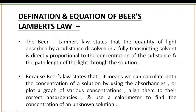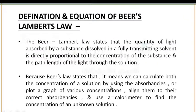In the previous lecture we studied Beer-Lambert's law, which states that the quantity of light absorbed by a substance dissolved in a fully transmitting solvent is directly proportional to the concentration of the substance. Beer's law states that absorbance is directly proportional to both concentration and path length of light through the solution. Using the Beer-Lambert equation we can calculate the concentration of a solution from its absorbance, or plot a graph of various concentrations against their absorbance using a colorimeter to find the concentration of an unknown solution.